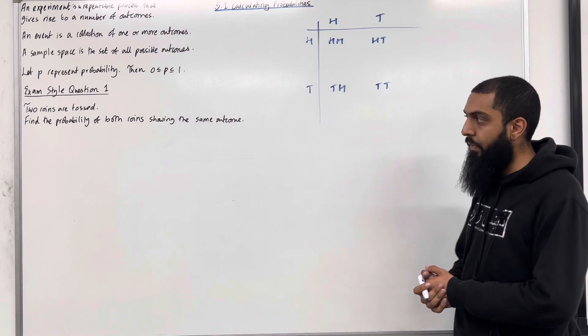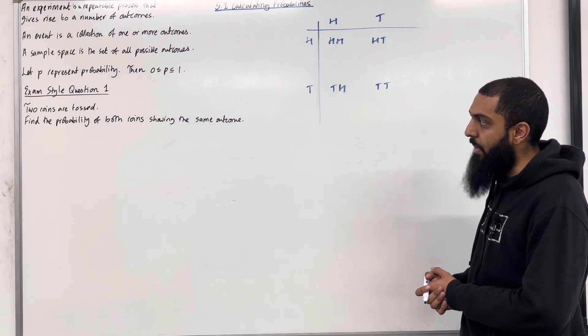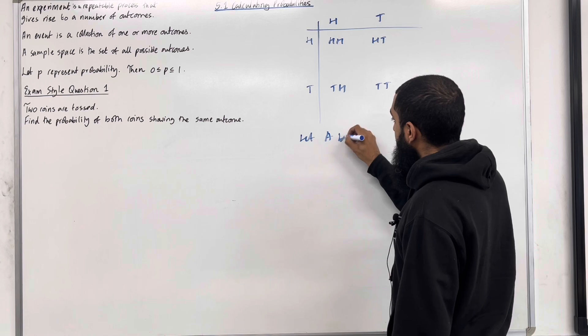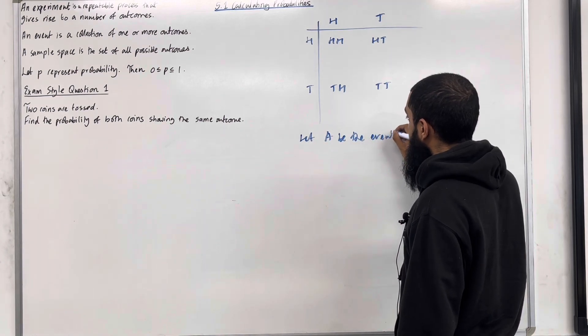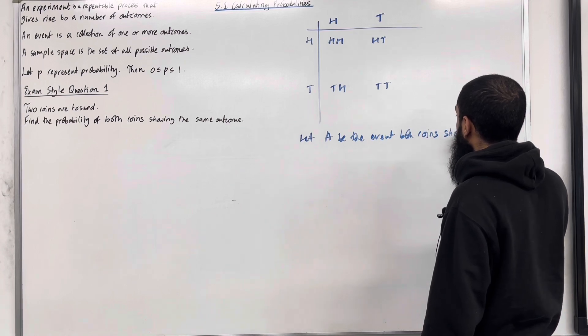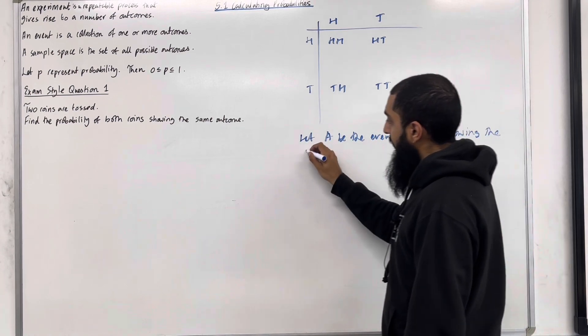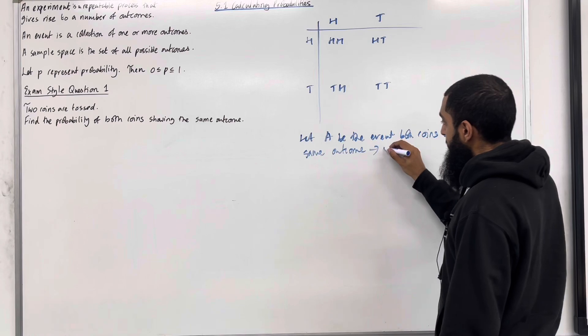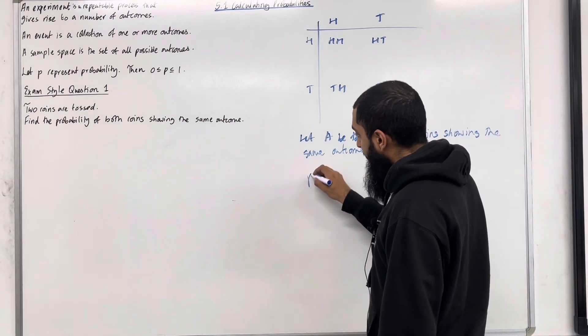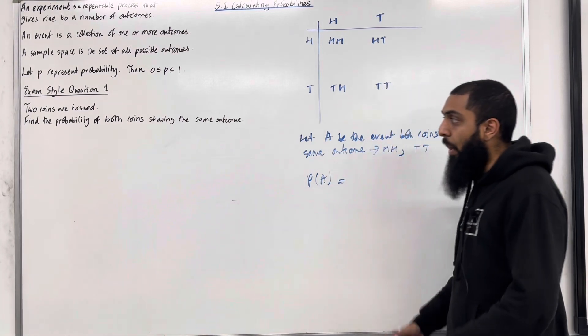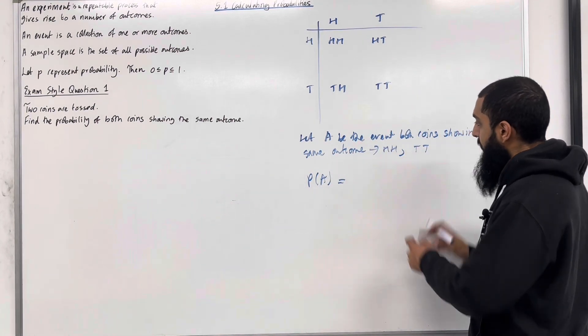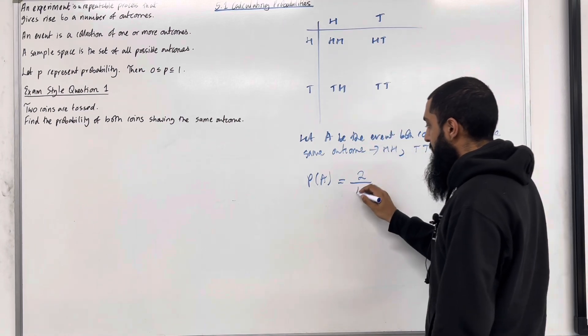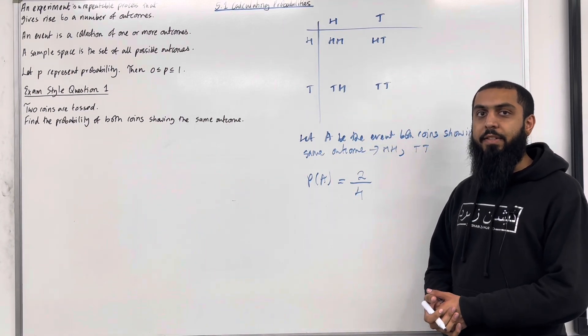Find the probability of both coins showing the same outcome. Let's give the solution a structure. Let A, for simplicity, be the event both coins showing the same outcome. So the possibilities are head, head, tail, tail. The probability of A taking place, in other words, the probability of both coins showing the same outcome, will be there are two possible outcomes, head, head, tail, tail. So two out of a possible four outcomes. This is the answer and this completes exam style question 1.